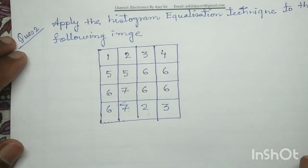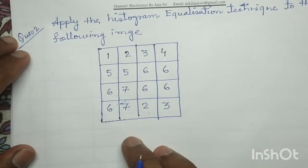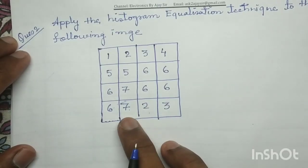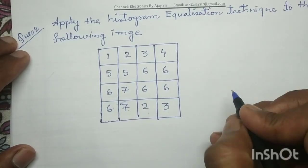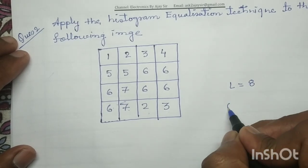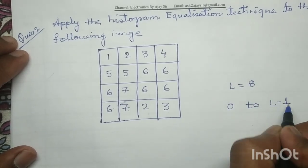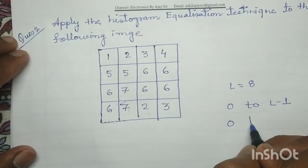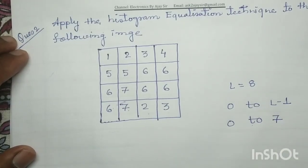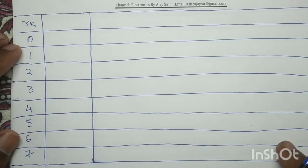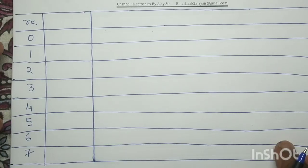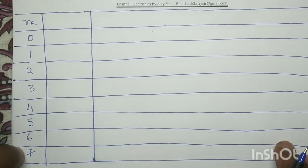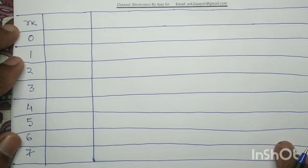In questions where an image is given, we identify the maximum number — here it is 7 — and for 7 the value of L is 8. If L equals 8, the grayscale varies from 0 to L minus 1, that is 0 to 7. In the first column we mention RK, the different gray labels: 0, 1, 2, 3, 4, 5, 6, 7.